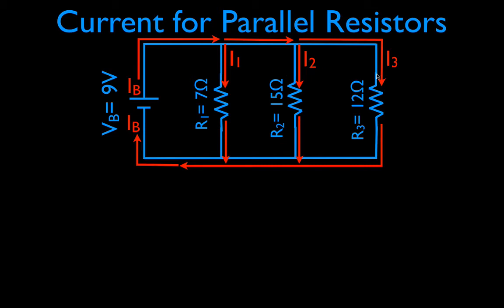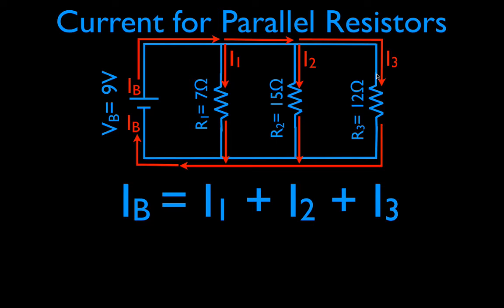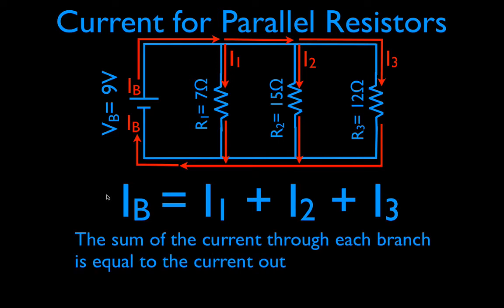The rule for parallel resistors is this: we started with one current IB and it split into three branches, so the sum of the currents through each branch is equal to the current of the battery. That's the current rule for parallel resistors. If we add them all up we'll know the battery current, or if we know the battery current we know how it's split. These resistors are different, so the current through each is not the same — if they were all equal, we'd just divide IB by three.